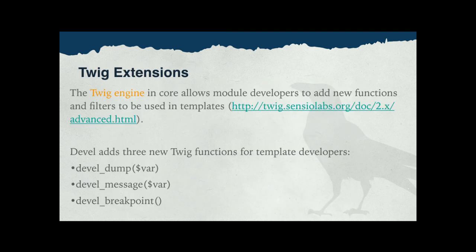There was a fair amount of work to provide useful tools for Twig developers. Twig is a pretty flexible system — it lets you define your own Twig functions and Twig filters, and Devel has taken advantage of that. There are three new functions available when you install the Devel module: devel_dump, devel_message, and devel_breakpoint.